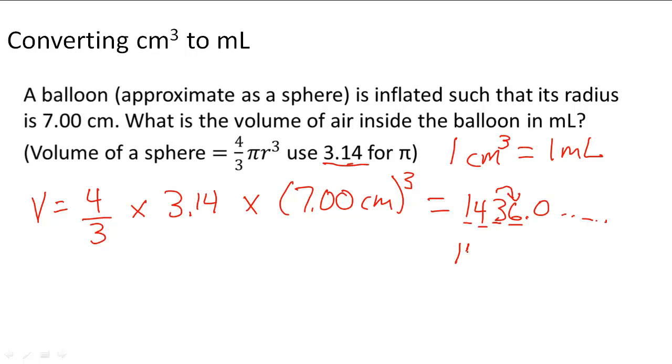So it's going to be 1, 4, 4, 0 centimeters cubed as the volume of this sphere. Notice that I cubed the radius: I multiplied 7 by 7 by 7. That makes the centimeters also become cubed. So 1, 4, 4, 0 centimeters cubed.